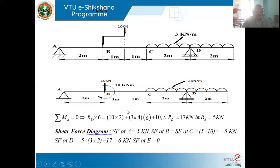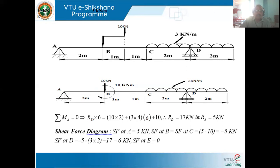To draw the shear force diagram, we need to know the forces at different points. Writing the shear force values at each point makes it easier to mark the diagram. We consider a section just after loads and before supports. RA is left upward, and left upward is positive for shear force. At A, left upward 5 kilonewton — positive. At B, there is no other load up to here, so it remains 5 kilonewton.